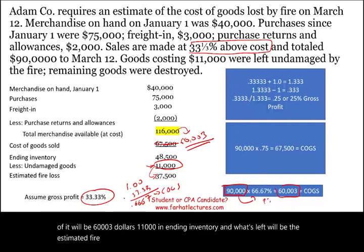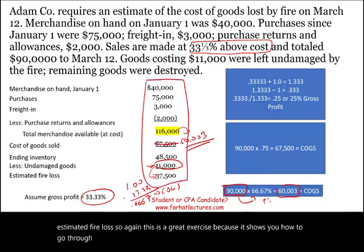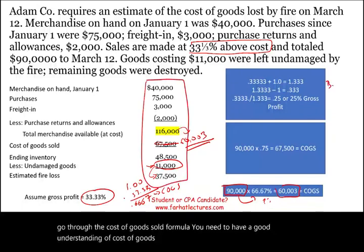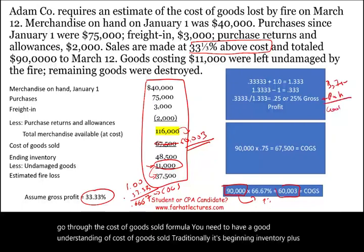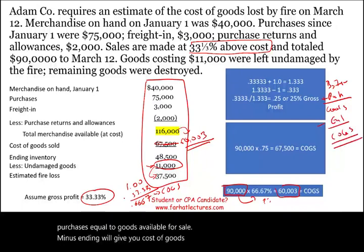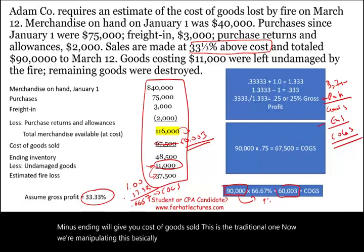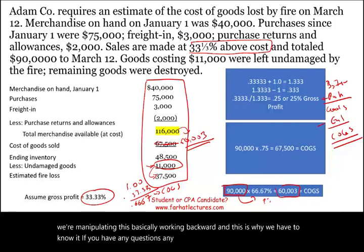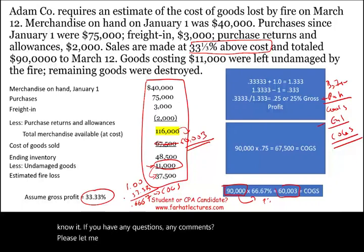This is a great exercise because it shows you how to work through the cost of goods sold formula. You need a good understanding of cost of goods sold. Traditionally: beginning inventory plus purchases equals goods available for sale, minus ending inventory gives you cost of goods sold. Now we're manipulating this by working backward, which is why you have to know it. If you have any questions or comments, please let me know. Study hard, good luck, stay safe, and subscribe. Don't shortchange yourself.